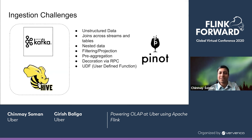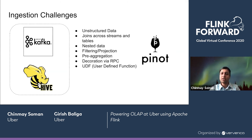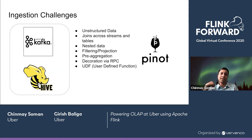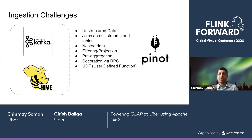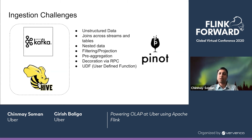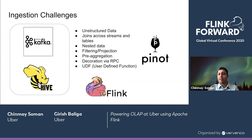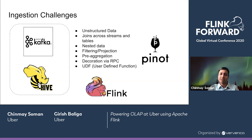In spite of all these features, there are many cases where Pinot alone is not sufficient. For example, if you're dealing with highly nested or unstructured data, if you want to do joins across streams and tables, or do some pre-aggregation before making data available for querying, we need to rely on an additional component. And there enters Apache Flink. With Flink and Pinot, this is a powerful combination that helps us solve a lot of critical use cases.